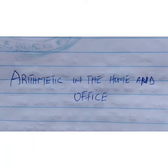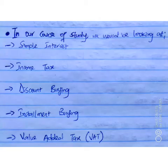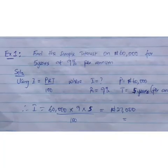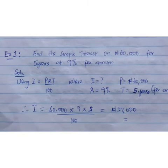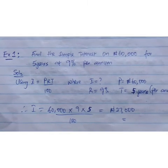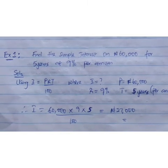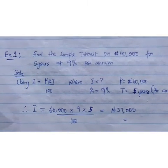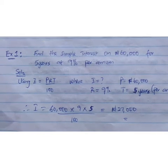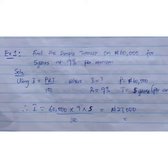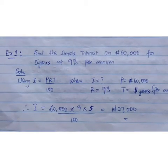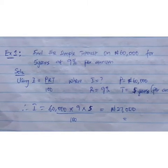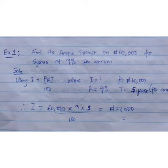Arithmetic in the home and office. Find the simple interest on 60,000 naira for 5 years at 9% per annum. Solution: Using I equals PRT over 100, which is interest equals principal times rate times time over 100.